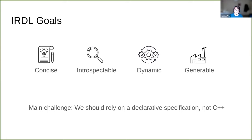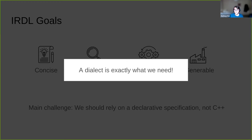The main challenge here is that we need to rely on a declarative specification of dialects, and we cannot use C++ to save us whenever something can't be expressed — or at least we should not rely heavily on C++. And the way of achieving all those features is exactly what a dialect is: something that is quite easily generable, introspectable, and dynamic.